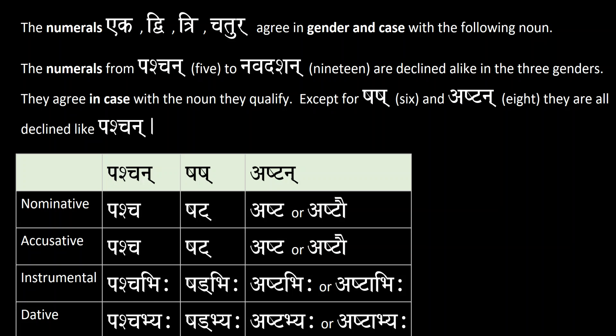Namaste and hello, this is your Sanskrit instructor welcoming you back into lesson number 247. In the earlier videos, we learned how to decline the numbers 1, 2, 3, and 4 — the numerals 1, 2, 3, and 4 — and we saw that they agree in gender and case with the following noun.